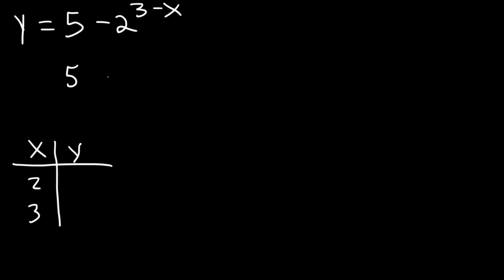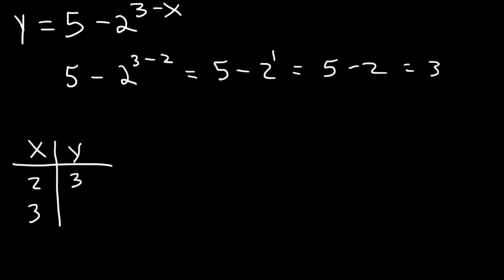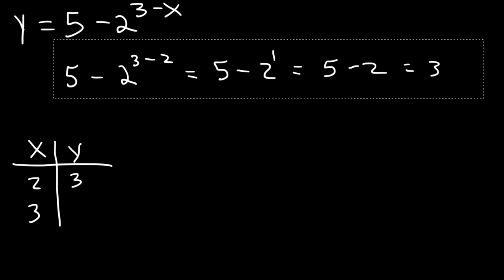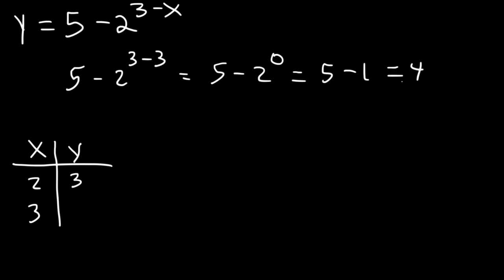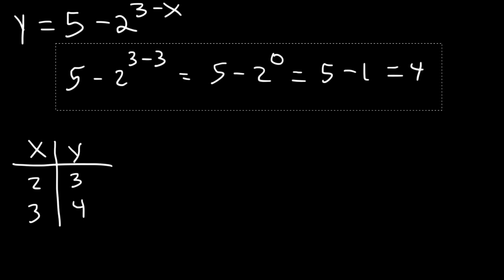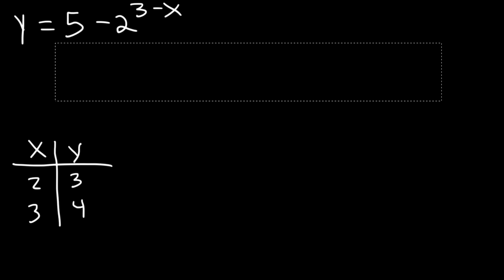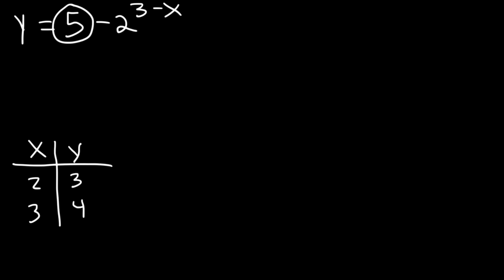When x is two: 3 minus 2 is one, 2^1 is two, and 5 minus 2 equals three. When x is three: 3 minus 3 is zero, 2^0 is one, and 5 minus 1 equals four. The horizontal asymptote is the constant in the equation — in this case it's y equals five.